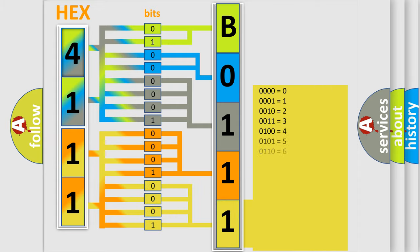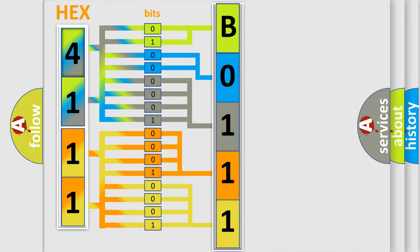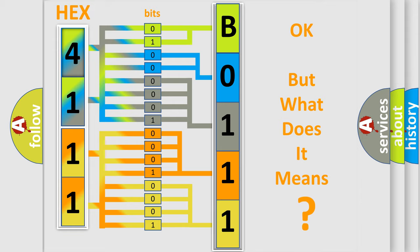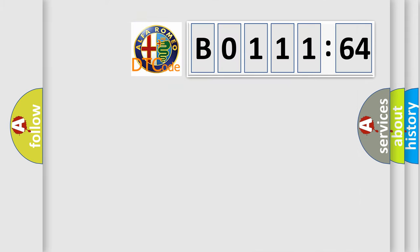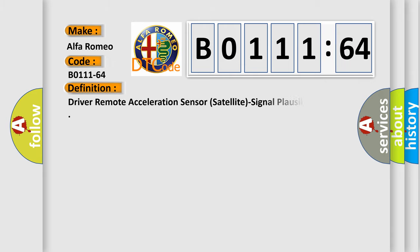A single byte conceals 256 possible combinations. We now know in what way the diagnostic tool translates the received information into a more comprehensible format. The number itself does not make sense to us if we cannot assign information about what it actually expresses. So, what does the diagnostic trouble code B0111-64 interpret specifically for Alfa Romeo?